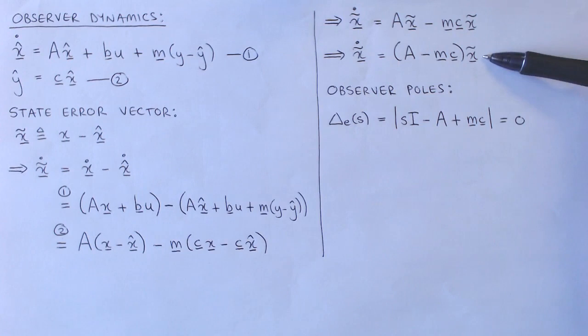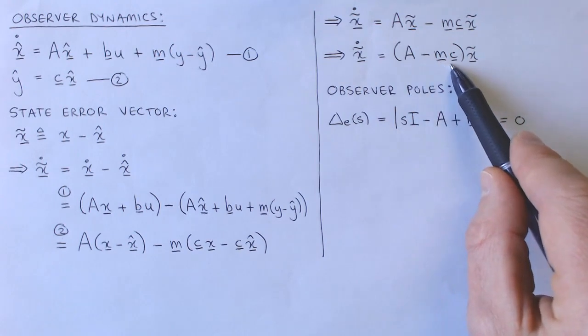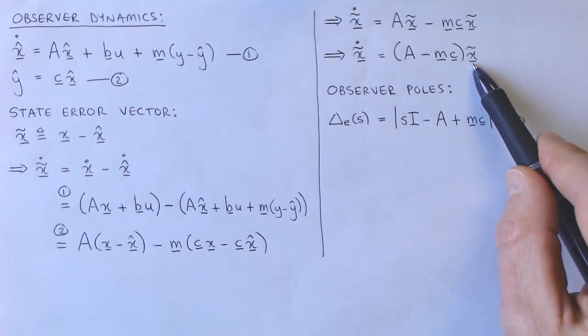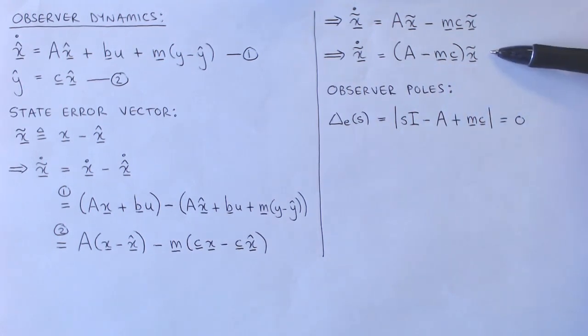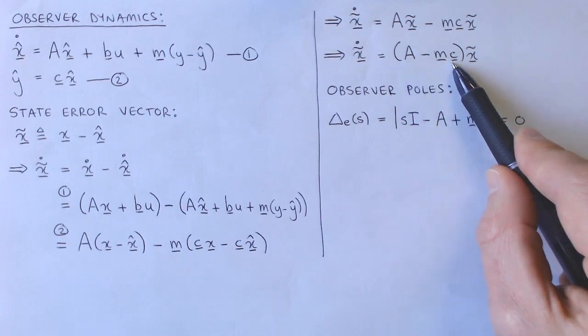After taking out the common factor X tilde, we get X tilde dot is equal to A minus MC times X tilde. This equation is a standard state equation with states X tilde and new A matrix A minus MC.